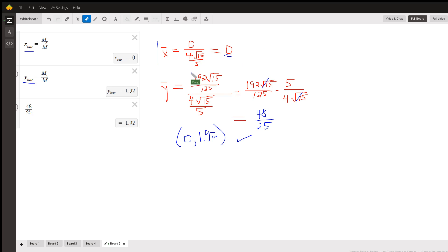Y bar is M sub x divided by M. Here is the beginning of the work to cancel out stuff, and there are the coordinates of the centroid.